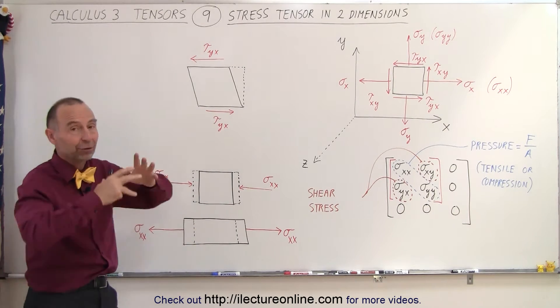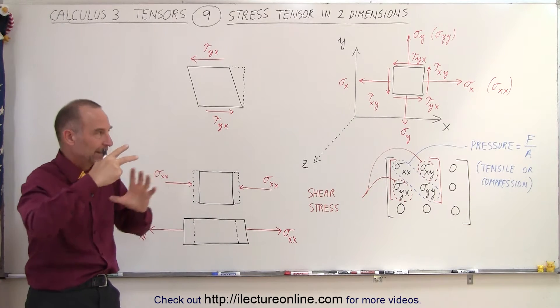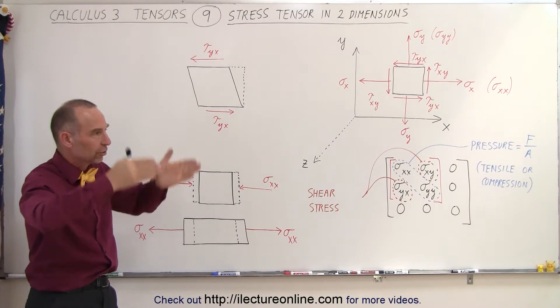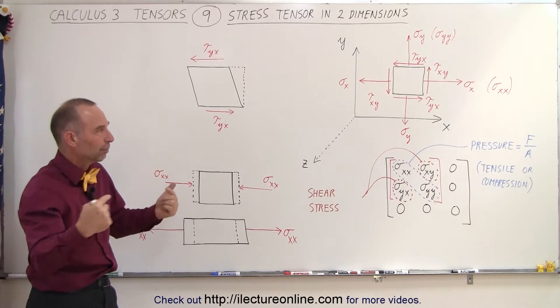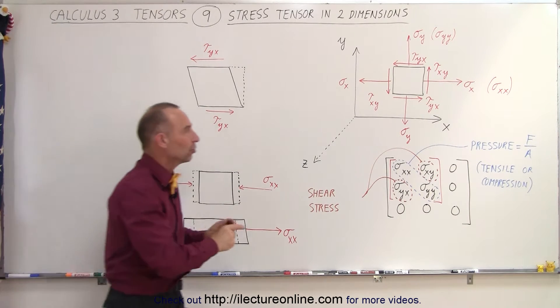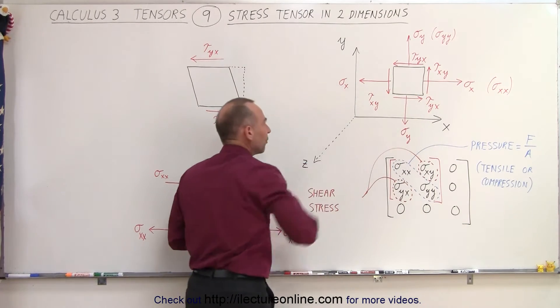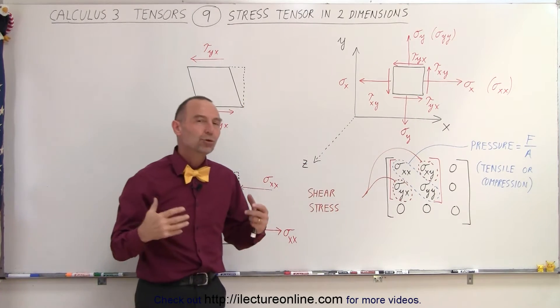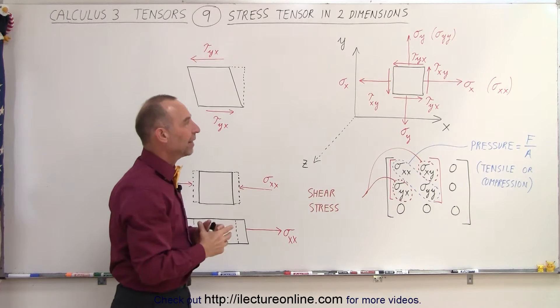Here we have, instead of a cube which has forces acting in all directions along the sides and towards its planes, a simple two-dimensional square with no depth, no z-direction. We have two kinds of forces acting on that.